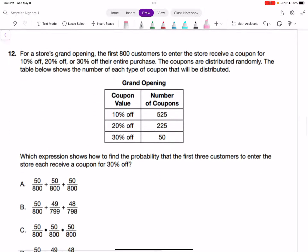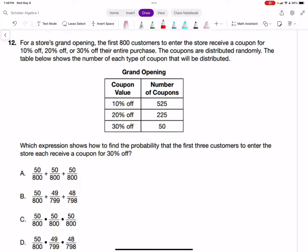Problem 12. At a store's grand opening, the first 800 customers to enter receive a coupon for 10%, 20%, or 30% off their purchase. The coupons are distributed randomly. The table shows 525 10% off coupons, 225 20% off coupons, and 50 30% off coupons. Which expression shows how to find the probability that the first three customers each receive a 30% off coupon?